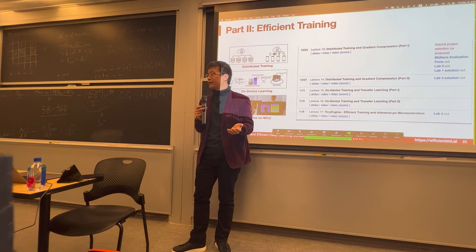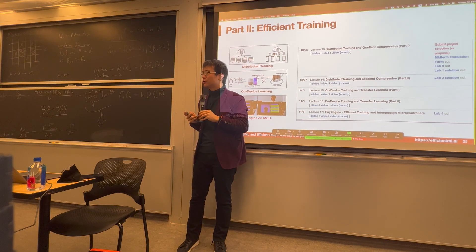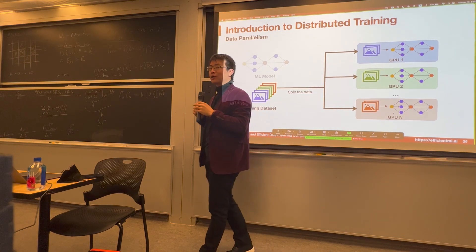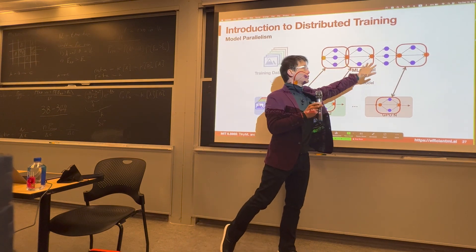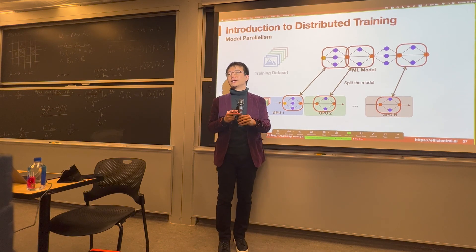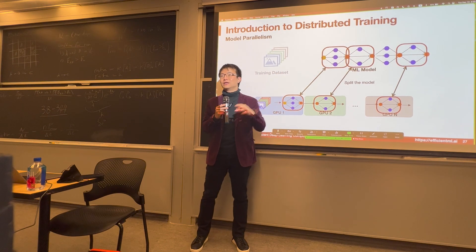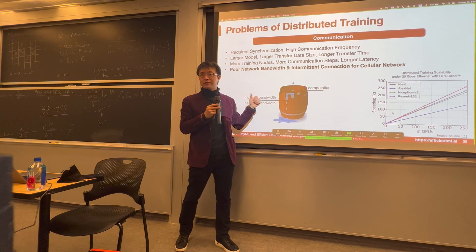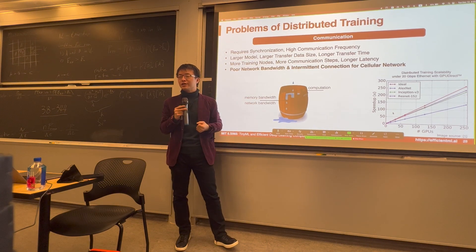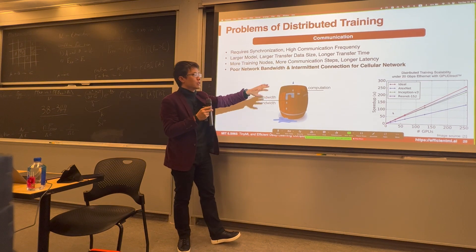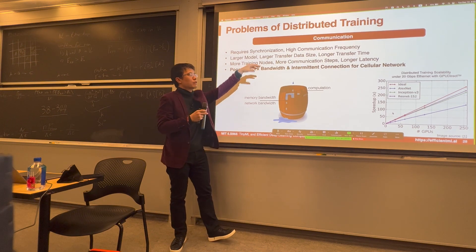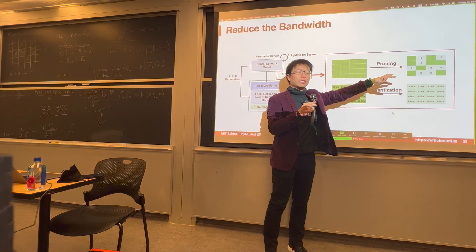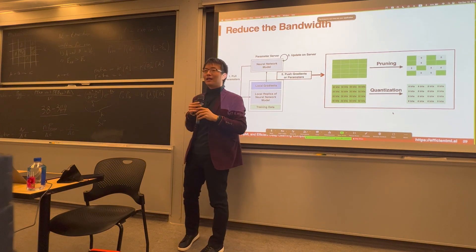We then switch from inference to training — first on the cloud with multi-node, multi-GPU distributed training. There are two parallelisms: data parallelism, where we split the data, and model parallelism, where we split the model across layers. Sometimes models are so large we need both. Communication is required during multi-node distributed training, and bandwidth is a big bottleneck — both memory bandwidth and networking bandwidth — since gradients need to be exchanged. We learn techniques to reduce networking bandwidth, such as pruning and quantizing gradients to send less data over the network.